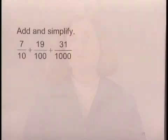In this exercise, we'll add and simplify 7 tenths plus 19 hundredths plus 31 thousandths.